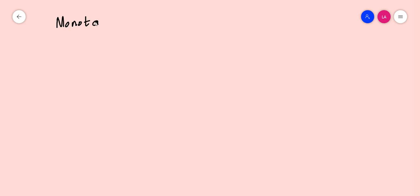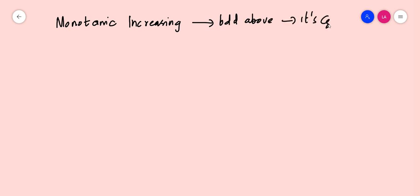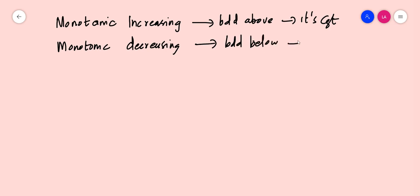For a monotonic sequence, in the case of the convergence criterion, it should be bounded. In the case of a monotonic increasing sequence, if it is bounded above, it is convergent. And in the case of a monotonic decreasing sequence, if it is bounded below, it is convergent. This is the necessary and sufficient condition for convergence of a monotonic sequence.